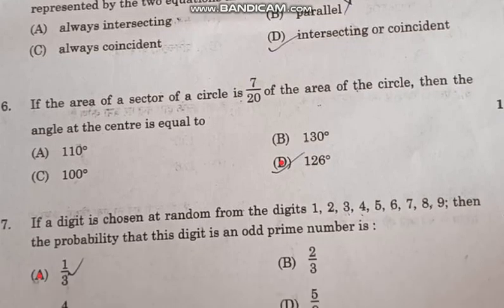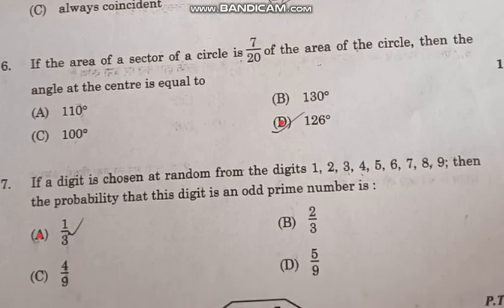Question number 6: If the area of a sector of a circle is 7 by 20 of the area of the circle, then the angle at center is equal to correct answer option D, 126 degrees.